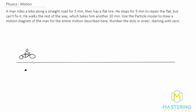I'm going to draw the pictures just so you can visualize what's going on more easily. He's riding his bike for five minutes down the road. We're going to assume he's going at the same speed, so we'll be drawing five dots: one, two, three, four, and five.